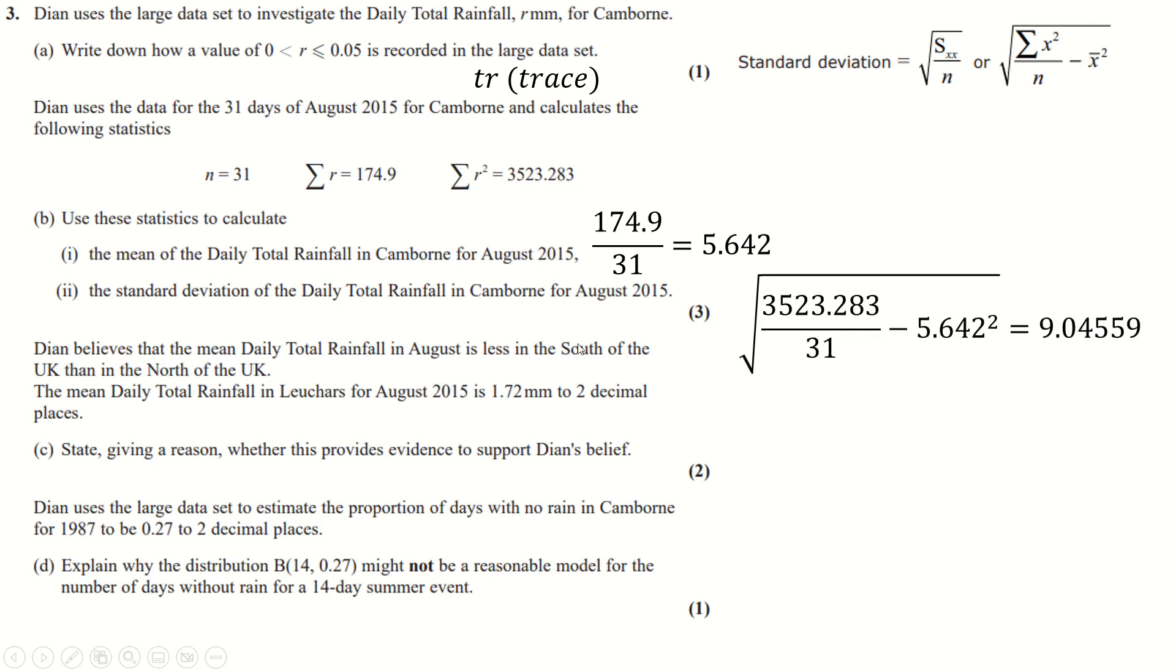And then he believes that rainfall in August is less in the South UK than it is in the North, which is probably true. However, based on our large data set information, because we obviously all have the knowledge that Luchars is more North in the UK than Camborn is, this actually doesn't make sense. This more northerly place gets much less rainfall on average, so this doesn't support his belief.